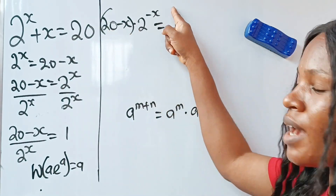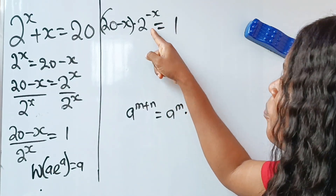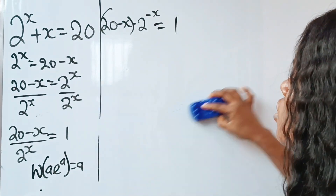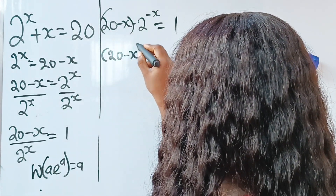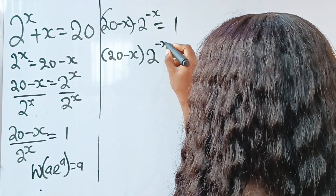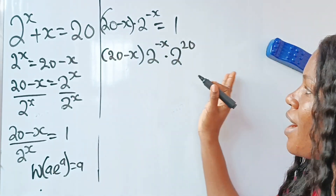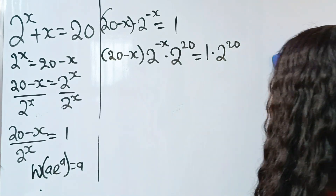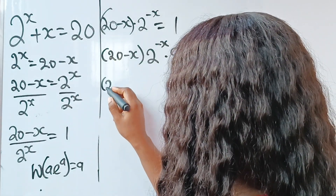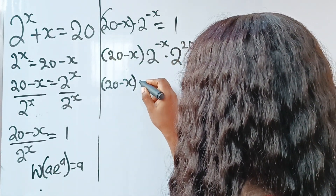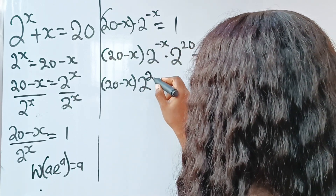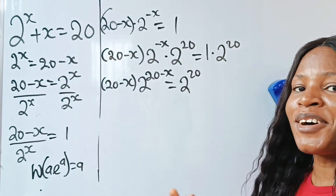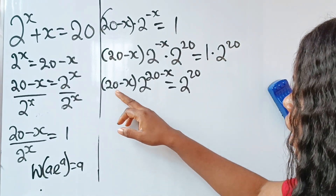So I'm going to multiply this side by 2 to the power of 20, and also multiply the other side by 2 to the power of 20. So we have: (20 minus x) multiplied by 2 to the power of minus x, multiplied by 2 to the power of 20, is equal to 1 multiplied by 2 to the power of 20. Now we can write this as (20 minus x) multiplied by 2 to the power of (20 minus x), which is equal to 2 to the power of 20.